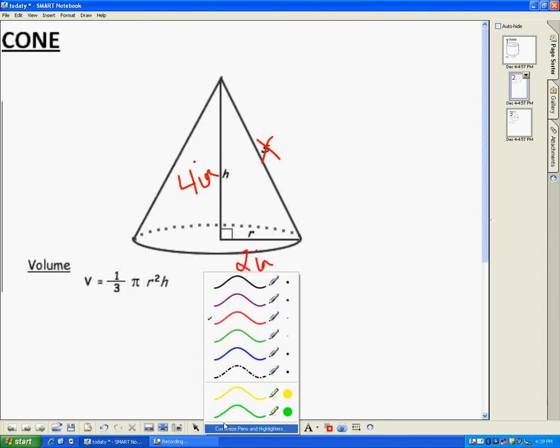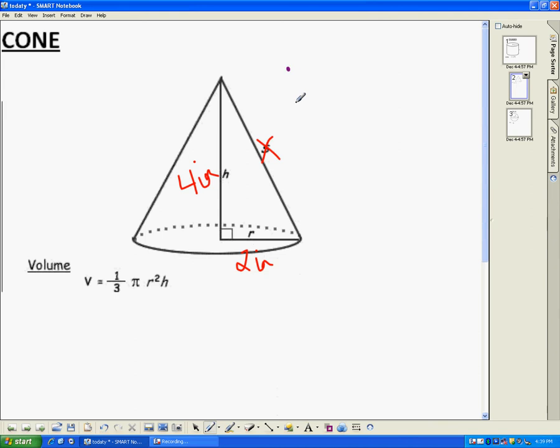So let's say that we have a height here of 4 inches, and we have a radius of 2 inches. We are going to plug it in. We've got volume is equal to 1 third of pi r squared h. So volume is equal to 1 third of pi. r is 2, so 2 squared is 4, and then my height is 4.